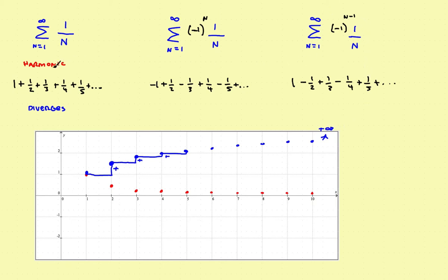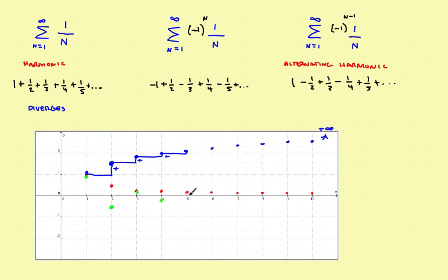Now let's compare that to an alternating harmonic series. I'll plot the sequence terms in green. The first term is 1. The second term is negative one-half, so it's below the x-axis. The third term is one-third, same as the red dot. The fourth is negative, the fifth positive, the sixth negative, positive, negative — it alternates between positive and negative and goes on forever. That is the alternating harmonic sequence.